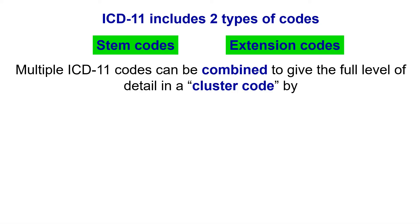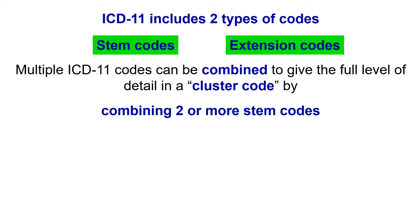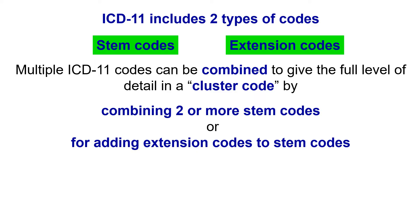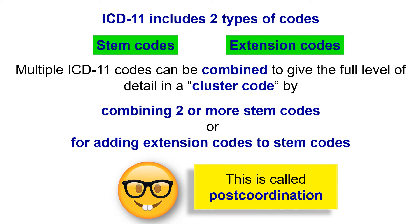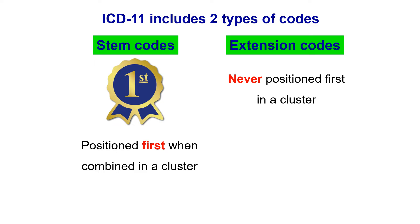Two or more ICD-11 codes can be combined to give a cluster. A cluster can be made of two STEM codes together, or by adding extension codes to STEM codes. In ICD-11 terminology, this is called post-coordination — the way ICD-11 gives us the chance to add detail to a diagnosis. In a cluster, STEM codes always come first; extension codes are never positioned first.